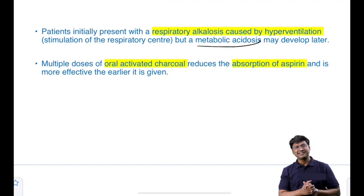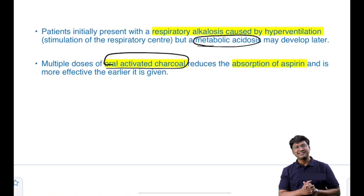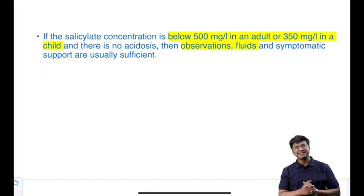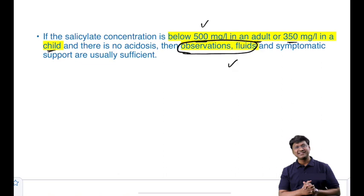The first-line treatment in aspirin overdose is to give multiple doses of oral activated charcoal, which will reduce the absorption of aspirin. Management is classified according to mild, moderate, and severe overdose based on salicylate concentration. If salicylate concentration is below 500 mg/dL in adults or 350 mg/L in children with no acidosis, observation and fluid supplementation with symptomatic support is sufficient — forced alkaline diuresis is not required.